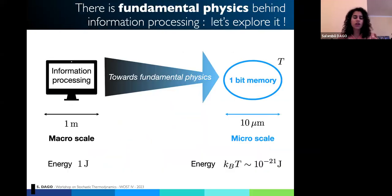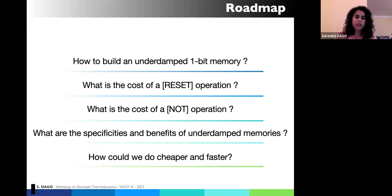That's why what we were doing was trying to go back to the fundamental physics behind information processing and scale down your computer or whatever device you're using to the smallest possible one bit memory that is naturally evolving at the scale of the fundamental bound stated by Ralph Landauer, which is the thermal energy at room temperature. During this talk, I will show you how we built an underdamped memory and use it to compute the cost of a reset operation and also a NOT operation, which is reversible. Then I will discuss the specificities and the benefits of underdamped memories. And in the end, I will try to open by showing how we can do better.